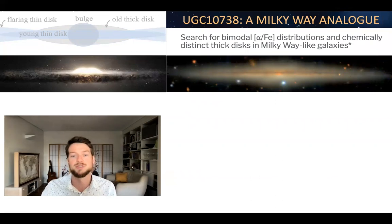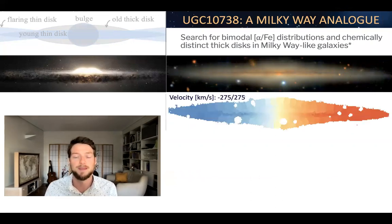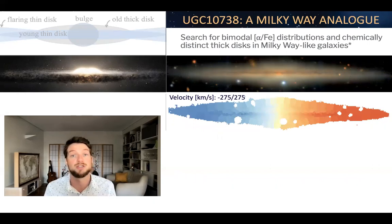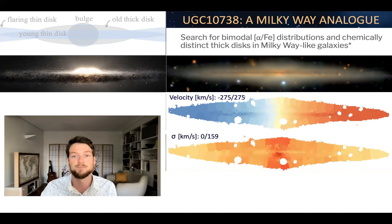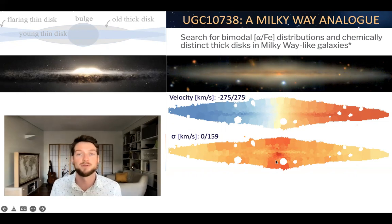So let's have a look in detail at UGC 10738. It has a rotational pattern very typical of disk galaxies, with a maximum rotation velocity that is very similar to our Milky Way. If we look at the velocity dispersion, we're again seeing similar patterns as our Milky Way, where in the thin plane of the disk, we're seeing a low dispersion. And as you go towards the center in the bar region, but also towards the center here, we're seeing a much higher velocity dispersion.